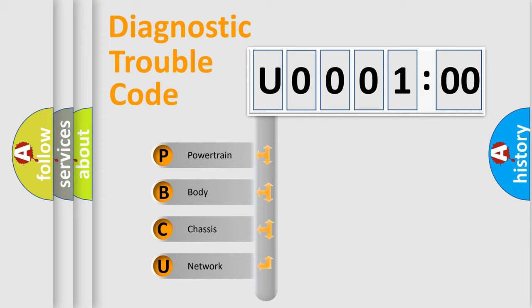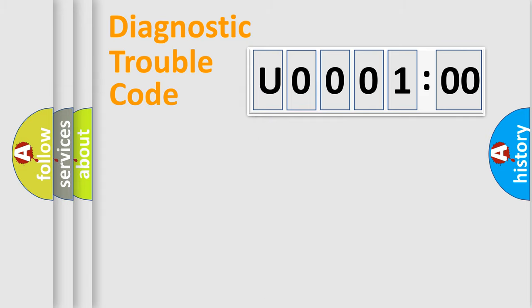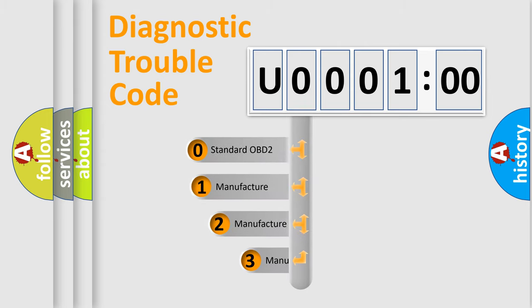We divide the electrical system of an automobile into four basic units: Powertrain, Body, Chassis, and Network. This distribution is defined in the first character of the code.